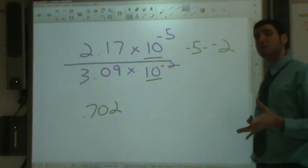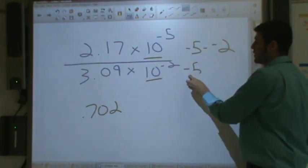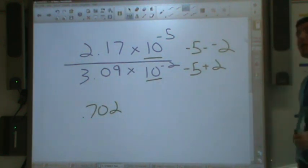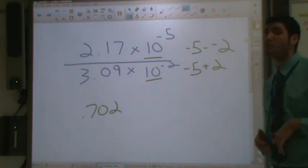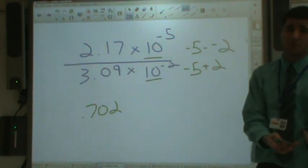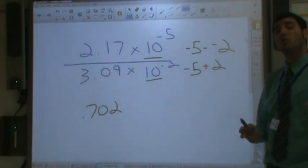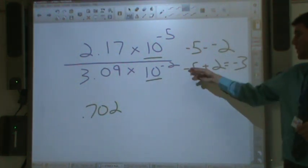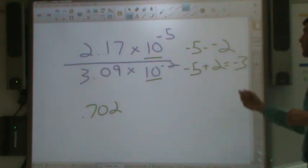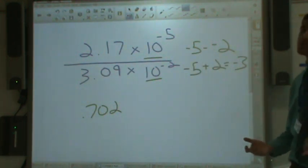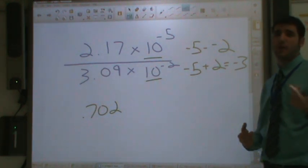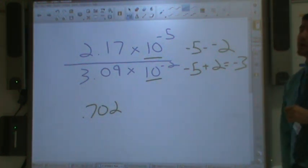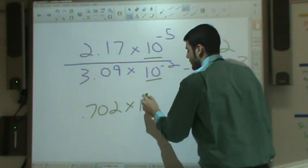Negative five minus negative two. Let's take a look at what that would be. We're going to do something called keep change change. Keep the first sign the same, change that subtraction sign to an addition sign, and change that negative two to positive two. So now we have negative five plus two. Let's think of it in terms of money. If you lose five dollars, you're down five dollars. But then you get two of them back. Now you're only down three dollars. Five minus two is three. The bigger number is five, so it's negative. So it's negative three. Or you could just think about it in terms of money. Everybody loves money. Unfortunately, I wish I had more.